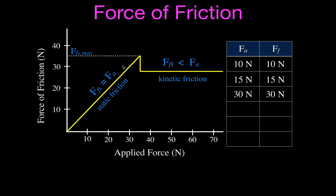At some point, you're going to overcome the maximum static friction force, and then the object will start moving. In this case, the maximum static friction force is about 35 newtons. So if you push with 30, 31, 32, 33, 34, and then get up to 35 and over 35 — for example, 40 — then the kinetic friction force is going to be about 28.